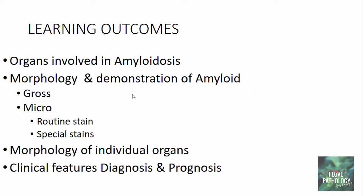In this final part, we discussed the organs involved in amyloidosis, the morphology and demonstration of amyloid, the morphology of individual organs, and the clinical features, diagnosis, and prognosis of amyloidosis.